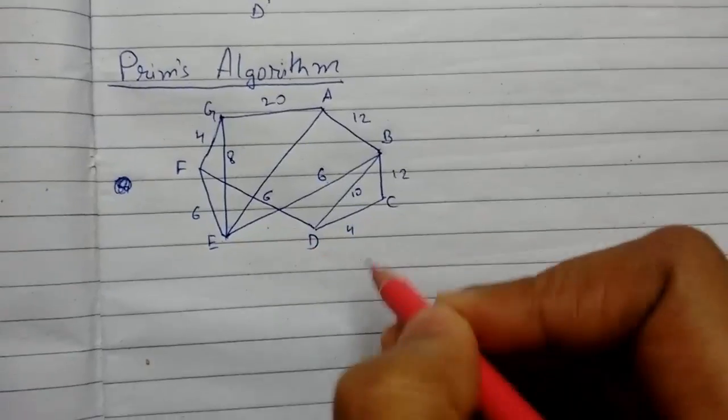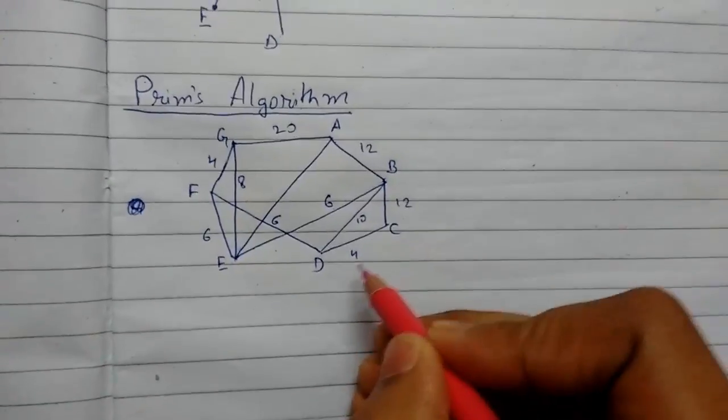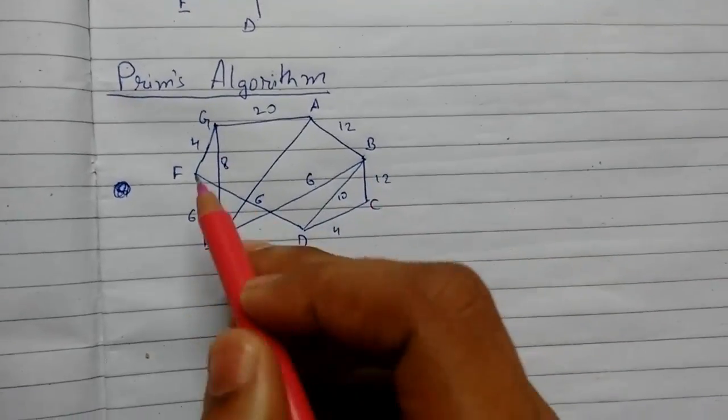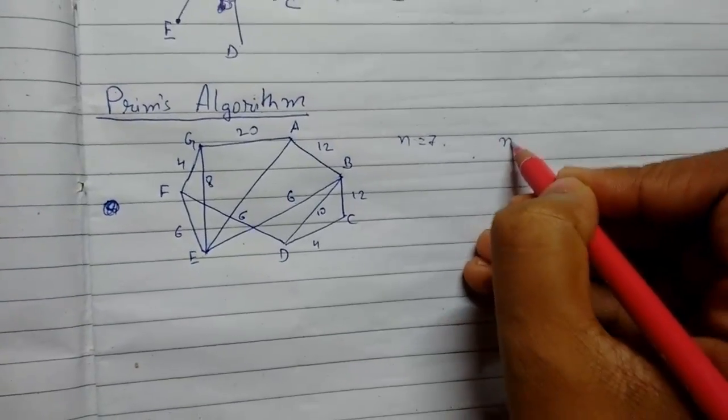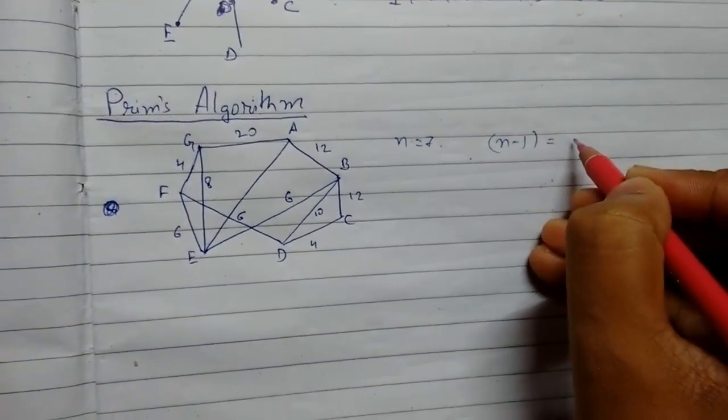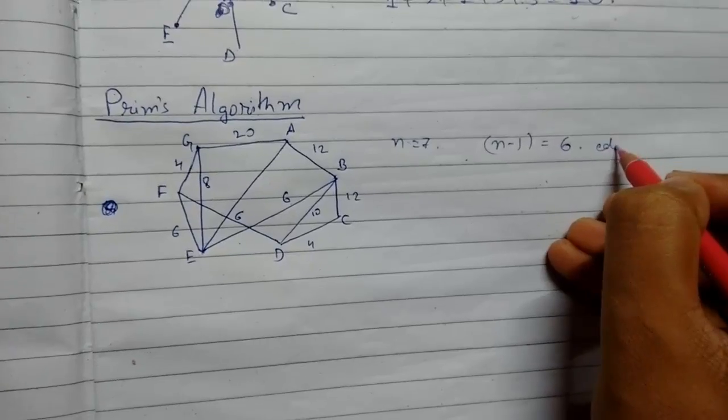So this is our graph. Now in this graph we have one, two, three, four, five, six, seven vertices, and the number of edges should be n minus one. That's that, here will be six edges to verify it.